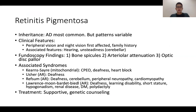Next is retinitis pigmentosa, which tends to come out in the Station 5 scenario. Usually the approach is fairly straightforward — it's someone who comes in with visual problems. It's one of those conditions we don't see very commonly in day-to-day practice, but for the purposes of the exam, if one adequately prepares for it, it's a station where one can do pretty well. Inheritance is primarily autosomal dominant, so family history is very important, but there are also variable patterns of inheritance.